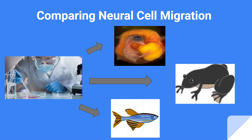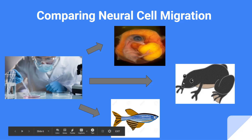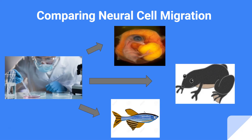To carry out this project, I plan to generate raw images of neural crest cell migration from three model organisms: the chick, the frog, and the zebrafish. This will also be facilitated by working in conjunction with labs at San Francisco State University.